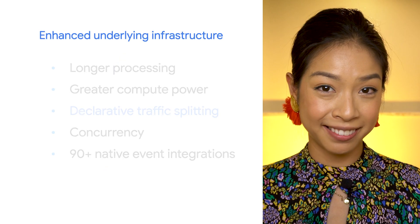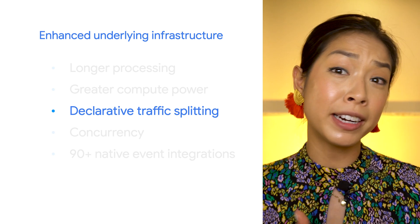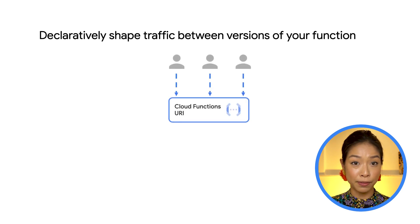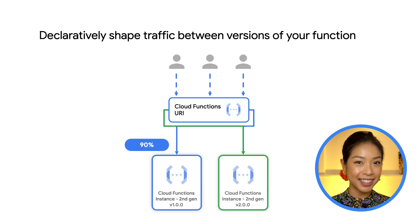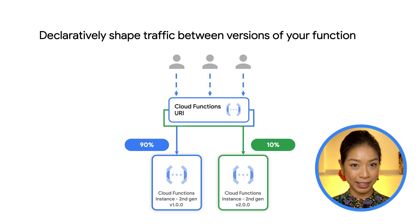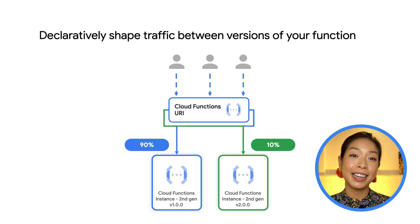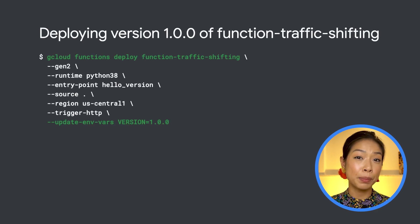Let's move on to traffic splitting. In Second Generation, Cloud Functions provides automatic traffic splitting between various revisions of your code. With this functionality, you can feel safer rolling out new versions of your code, as Second Gen makes patterns like canary deployments or A/B testing straightforward to implement. We'll simulate this scenario by deploying a simple HTTP function, starting with 10% of traffic to a new revision.